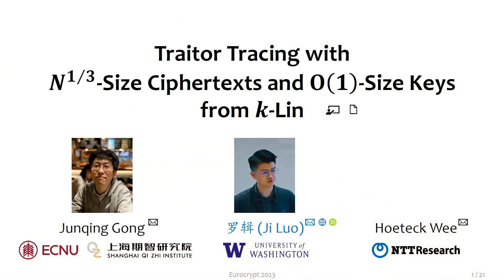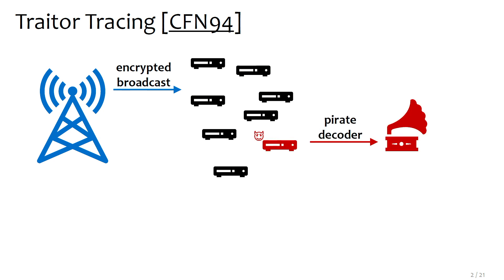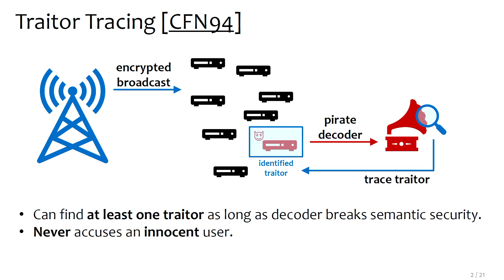Our next talk is on traitor tracing with n^(1/3) size ciphertext and O(1) size keys from pairings. This is work by Junqing Gong, Ji Luo, and Hoeteck Wee, and Ji will be giving the talk. In traitor tracing, a broadcast provider wants to provide encrypted broadcasts to multiple subscribers. The worry is that one subscriber might provide their key or a black-box pirate decoder to outsiders.